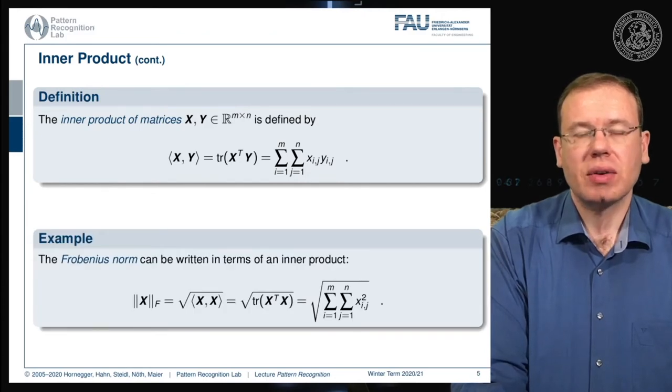If you follow this definition, you can find the Frobenius norm as the inner product of x with itself. This means we essentially square all of the elements and then sum them up. So this is the Frobenius norm.